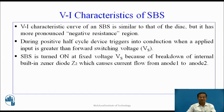The VI characteristics curve of an SBS is similar to that of the DIAC, but it has a more pronounced negative resistance region. During the positive half-cycle, the device triggers into conduction when the applied input is greater than the forward switching voltage VS. SBS is turned on at fixed voltage VS because of breakdown of the internal built-in Zener diode Z2, which causes current flow from Anode 1 to Anode 2.